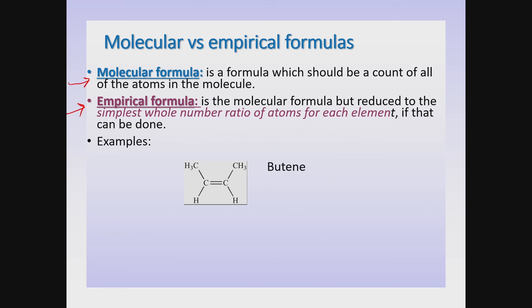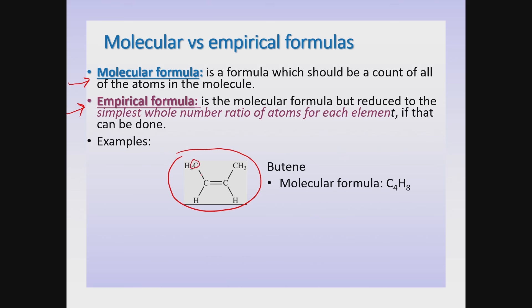Here we have a structural formula for the molecule called butene, which shows you how the atoms in the molecule are connected together. To figure out the molecular formula for butene, all you have to do is count up all the atoms of each element. If you look carefully, there are one, two, three, four carbon atoms — so it's C4.